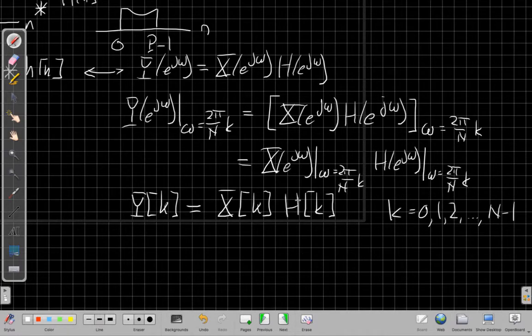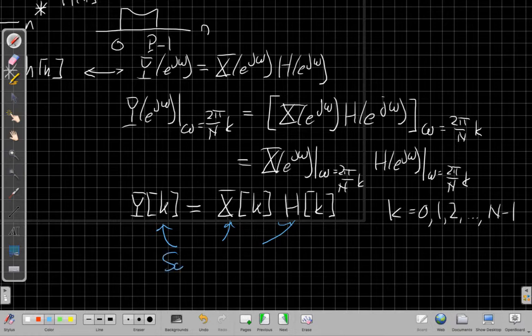Each of these would be X[k], the DFT of the input, and H[k], the DFT of the filter. I'm multiplying them for each k from 0 up to N minus 1, where N is the number of samples I took in omega in frequency. For this to work, I need all three of these to have the same DFT size N.